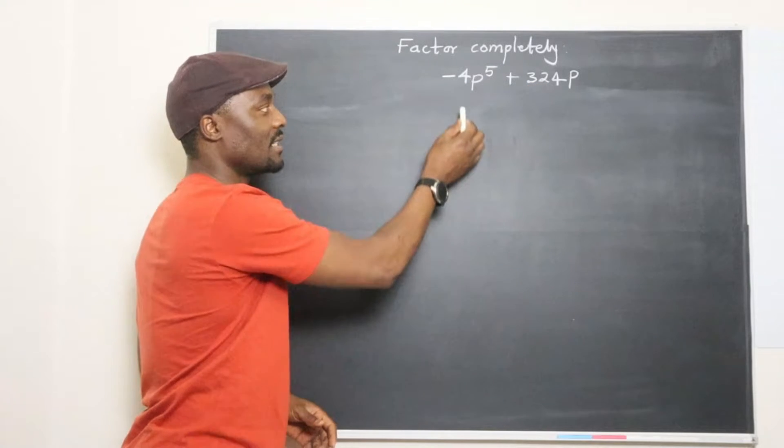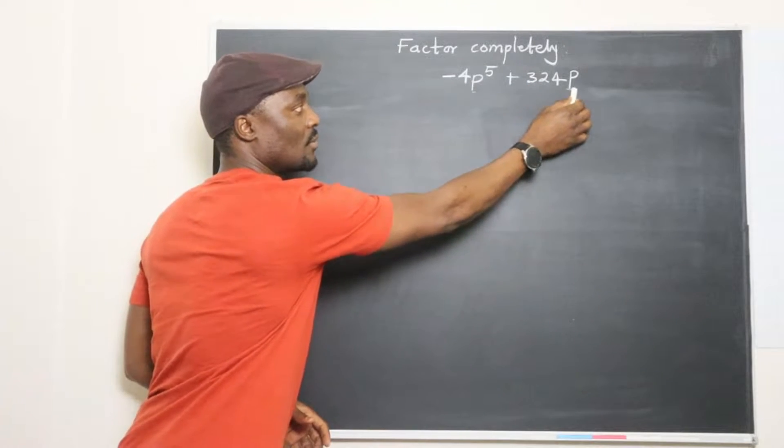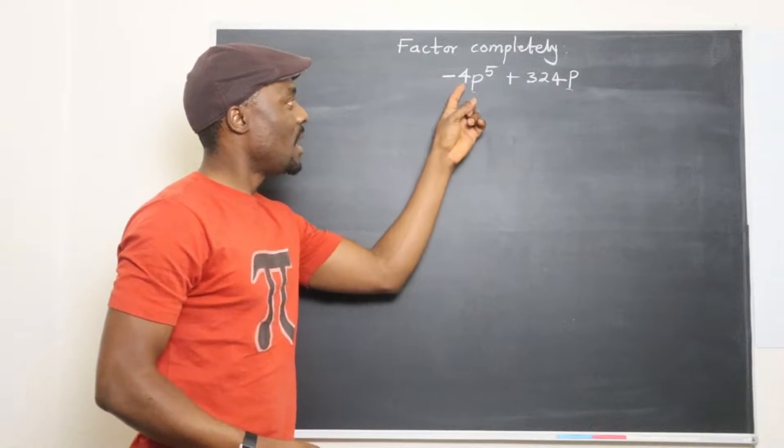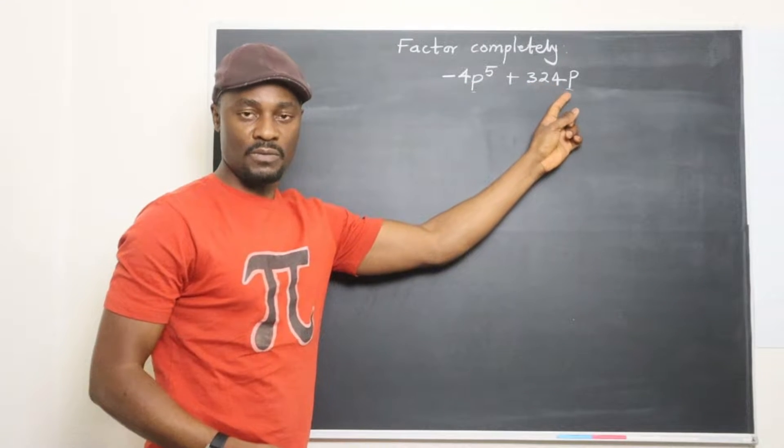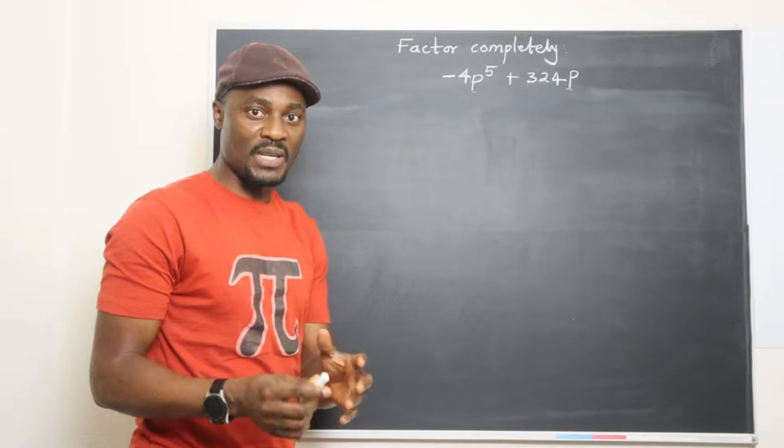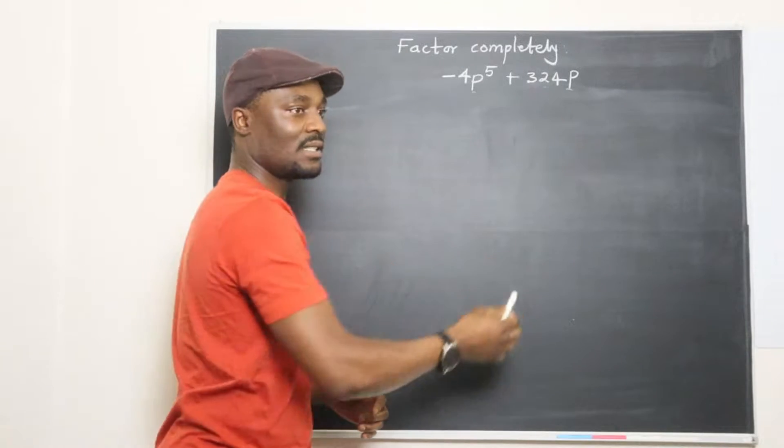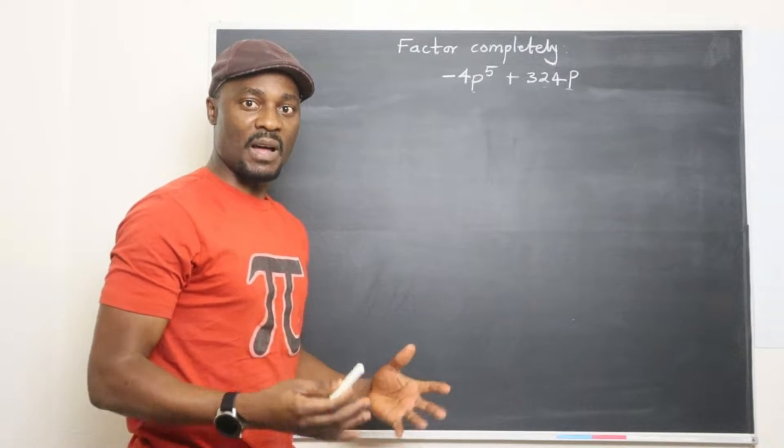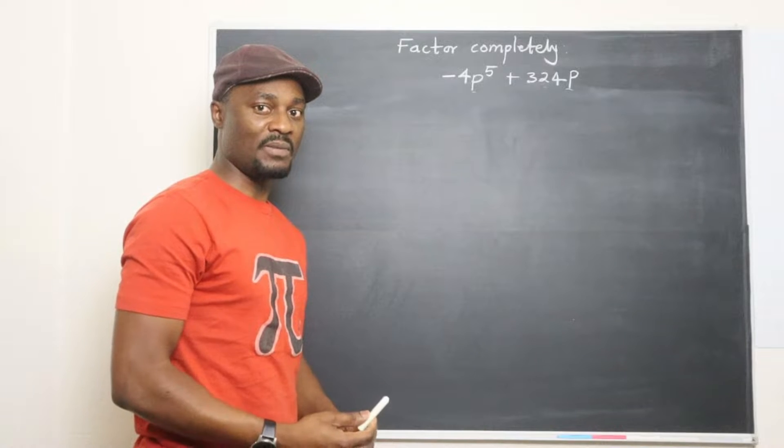So this expression, I can tell that there's P here, there's also P here. Also there's a number 4, I'm sure 4 will also divide 324. Remember the rules of divisibility: if the last two digits form a number divisible by 4, then that number is divisible by 4.